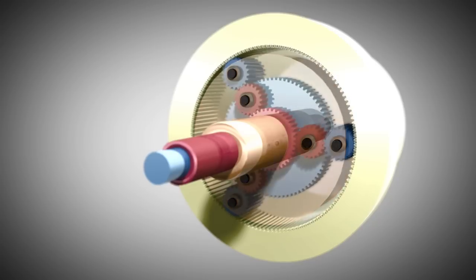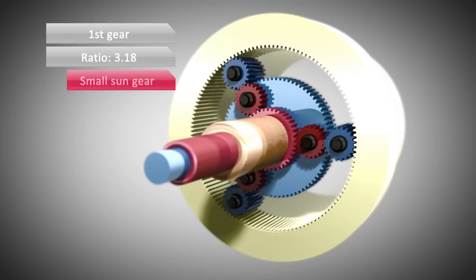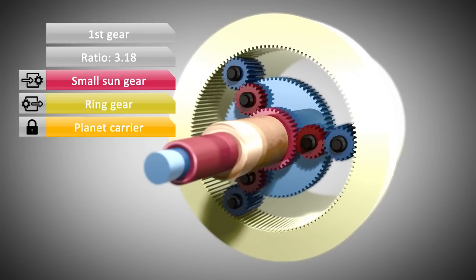In first gear, the small sun is driven by the torque converter, which is driven by the engine. The planet carrier is held still by a multi-plate brake or one-way clutch, so it cannot rotate. The ring gear is connected to the output and drives the wheels of the car.